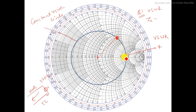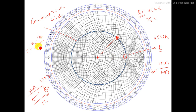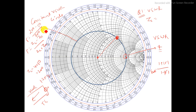The formula VSWR equals (1 plus |gamma|) divided by (1 minus |gamma|) gives the VSWR, and from it you can calculate gamma. Another method: gamma equals ZL minus Z0 divided by ZL plus Z0. Since ZL is complex here, it is a bit difficult. So instead, we read the value from the chart — 4 — which is the normalized real part. We denormalize: ZL = 4 times 50 = 200 ohms. Then gamma = (200 − 50) divided by (200 + 50), giving the reflection coefficient.